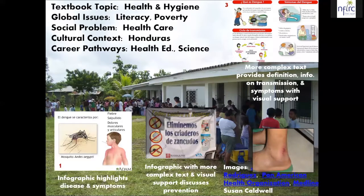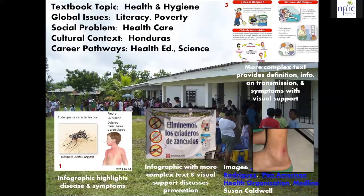As I'm looking for texts that will give learners opportunities to gather information about health care in Honduras, maybe one of the things we're going to be working on is generating materials to help the local population take better care with regard to the causes of dengue fever. So I'm going to be looking for texts that are accessible for my learners. With a beginning level class, on the left you'll see that maybe my first text is going to be something really simple — an infographic that shows what causes the fever and what some of the symptoms are, many of which might show up in my textbook vocabulary list anyway.